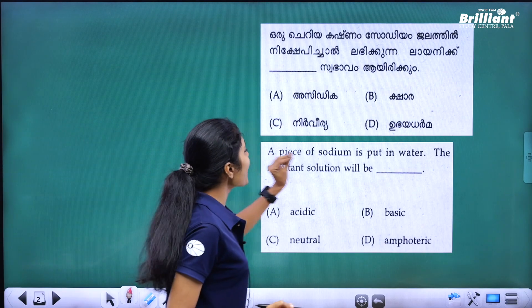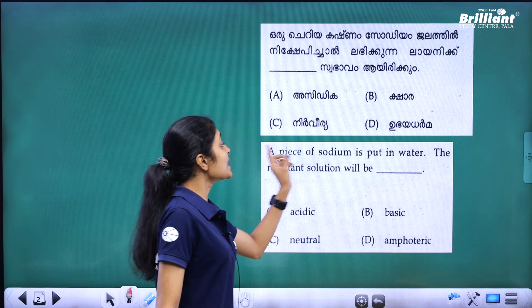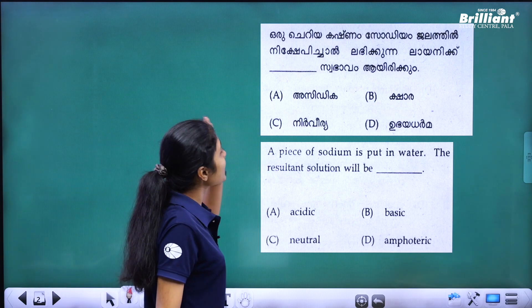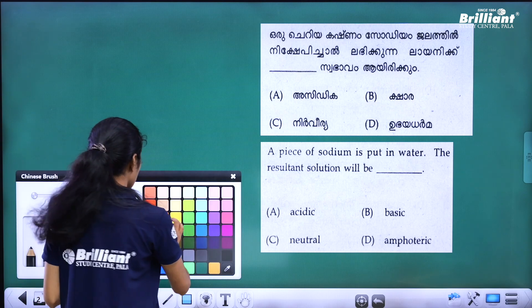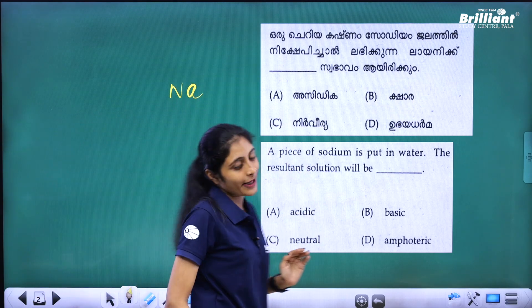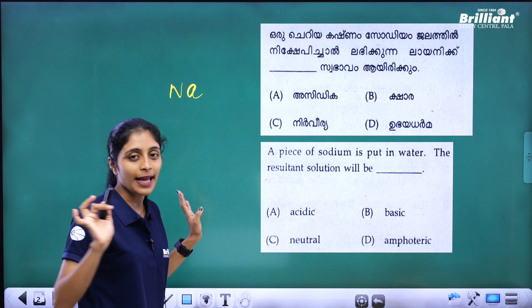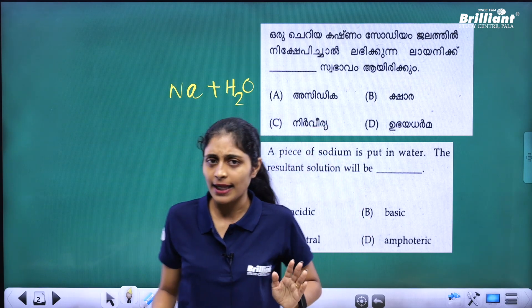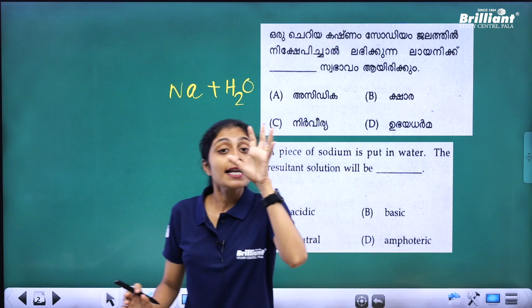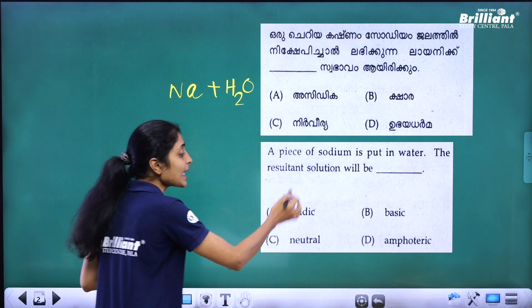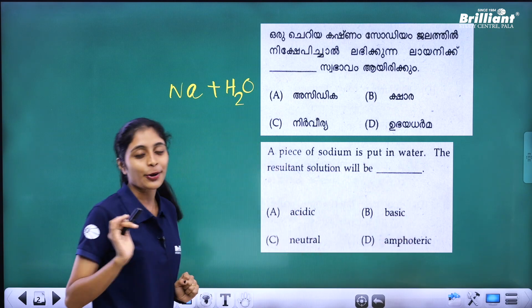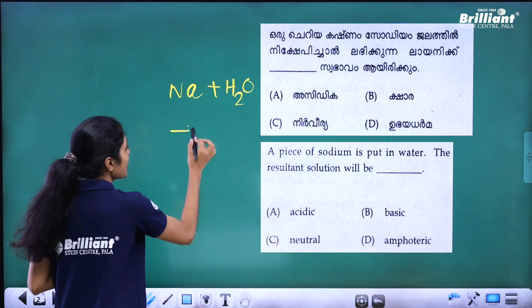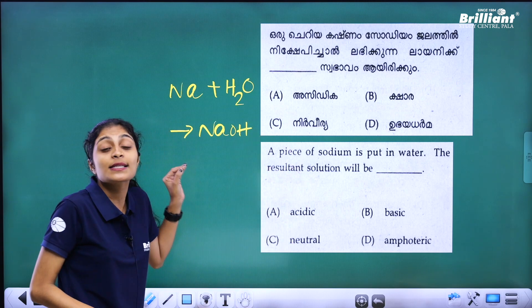The first question is: a piece of sodium is put in water — the resultant solution will be what? When sodium reacts with water, the product is NaOH, sodium hydroxide. H⁺ ions are released by acids in water, and OH⁻ ions are released by bases in water.